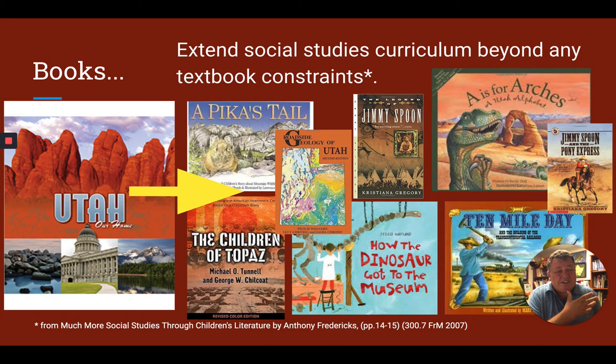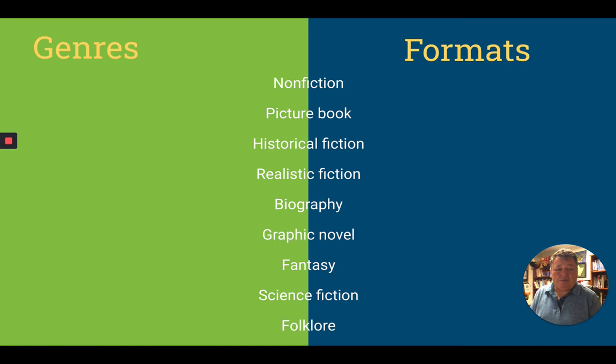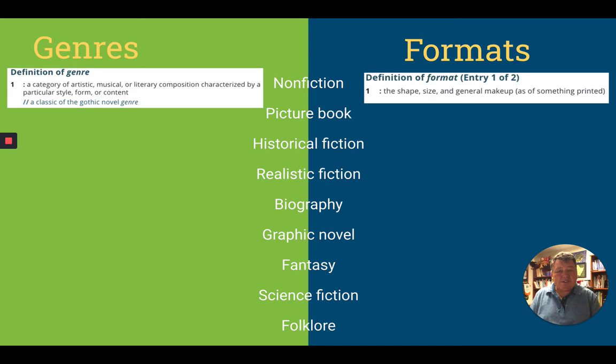But to really understand them, you need to understand these two terms: genre and format. They're used to describe a whole collection of different books, so you really have to know these basics. A genre is a category of books characterized by a particular style, format, or content.